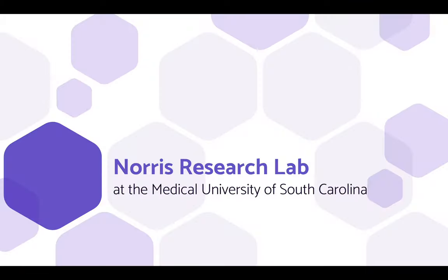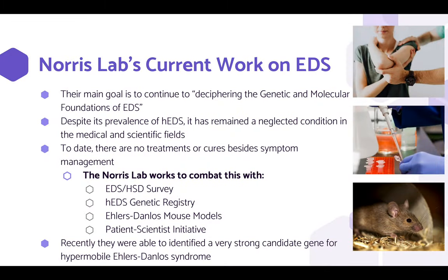Here is a lab that is doing current research into EDS. The main goal of this lab is to continue deciphering the genetic and molecular foundations of EDS. Despite its prevalence, it has remained a neglected condition in the medical and scientific field. To date, there are no treatments or cures besides symptom management. The Norris Lab works to combat this with their EDS-HSD survey, HEDS genetic registry, EDS mouse models, and the Patient Scientist Initiative. Recently, they were able to identify a very strong candidate gene for HEDS.